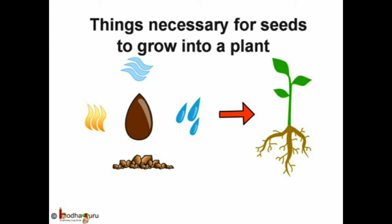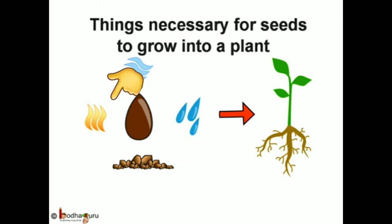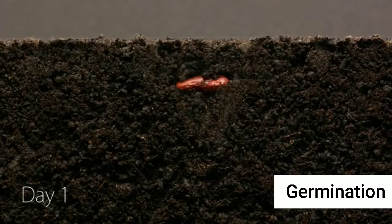The main conditions for germination are air, water, and sunlight. If any one of these conditions is not available to the seed, it will not germinate.